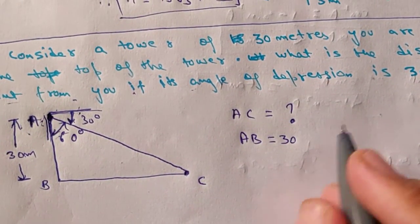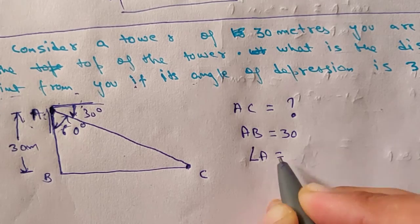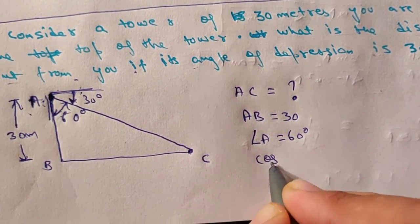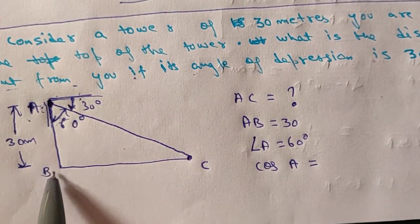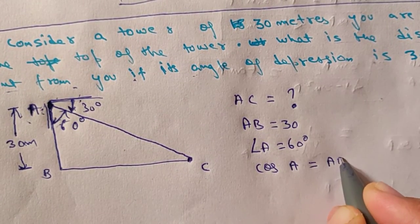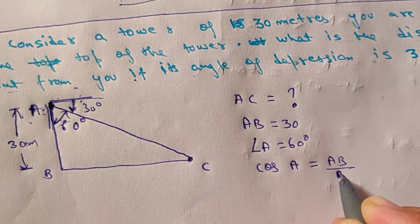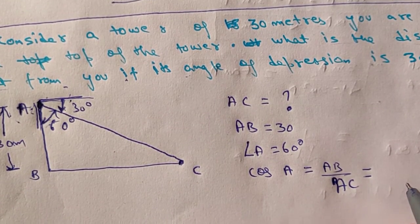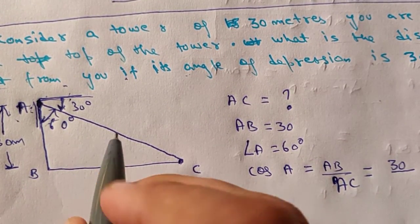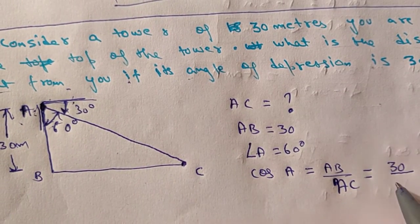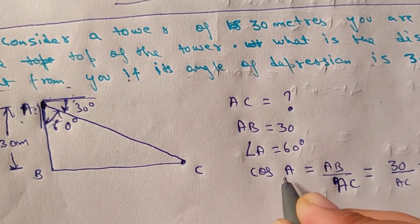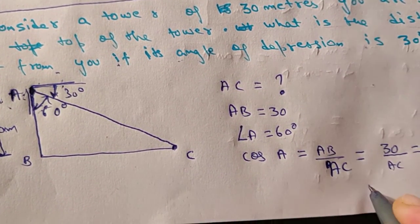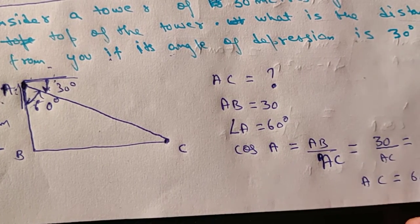We are given AB = 30 meters. Since the angle of depression is 30°, the angle inside the triangle at A (angle BAC) is 60° because they are complementary — 30° and 60° add to 90°. Now we apply cos A: cos 60° = AB/AC = 30/AC. Since cos 60° = 1/2, we get AC = 60 meters.